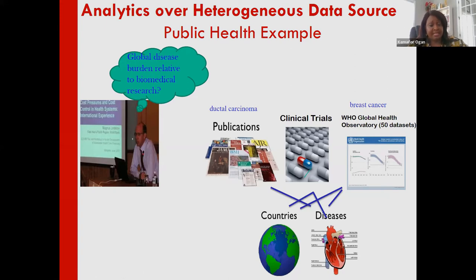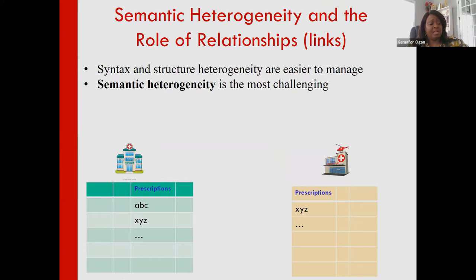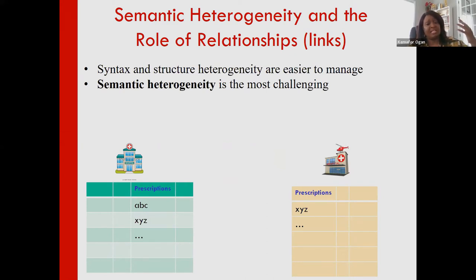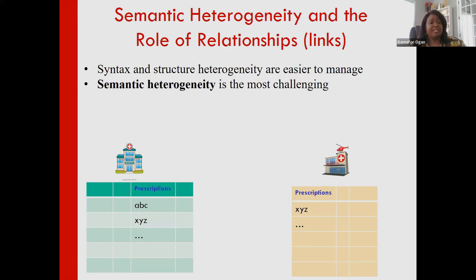There will be differences in both syntax and structure — some sources may be spreadsheets, some relational databases, some PDF documents. Syntactic and structural heterogeneity is easier to manage with wrapper technologies. The real challenge is semantic heterogeneity, because this is related to content, which is very ad hoc and hard to anticipate ahead of time. You need techniques that automatically link up terms across different data sources where possible.